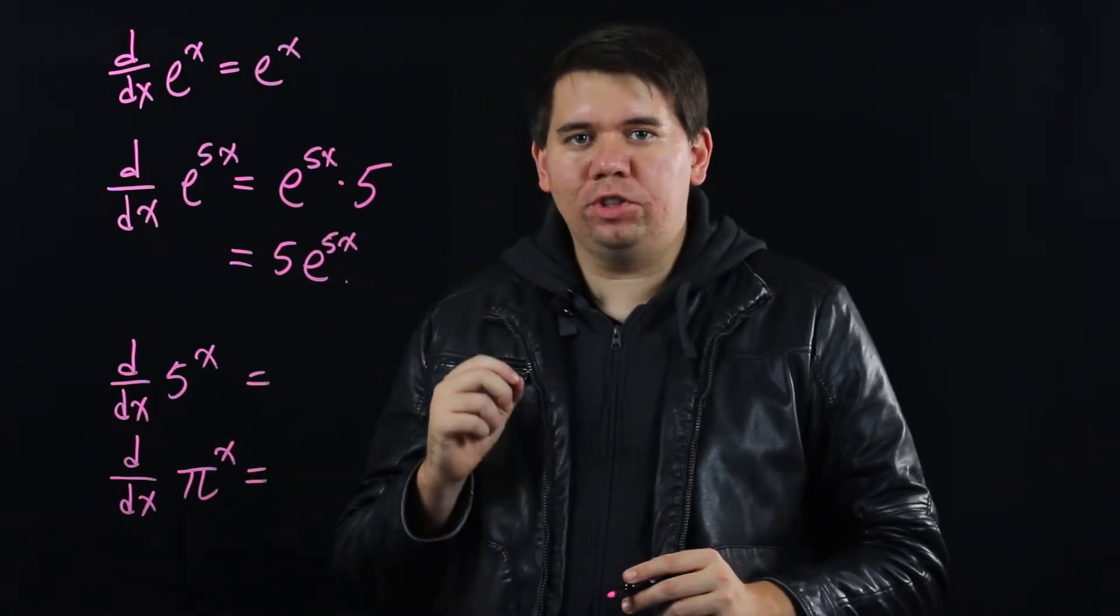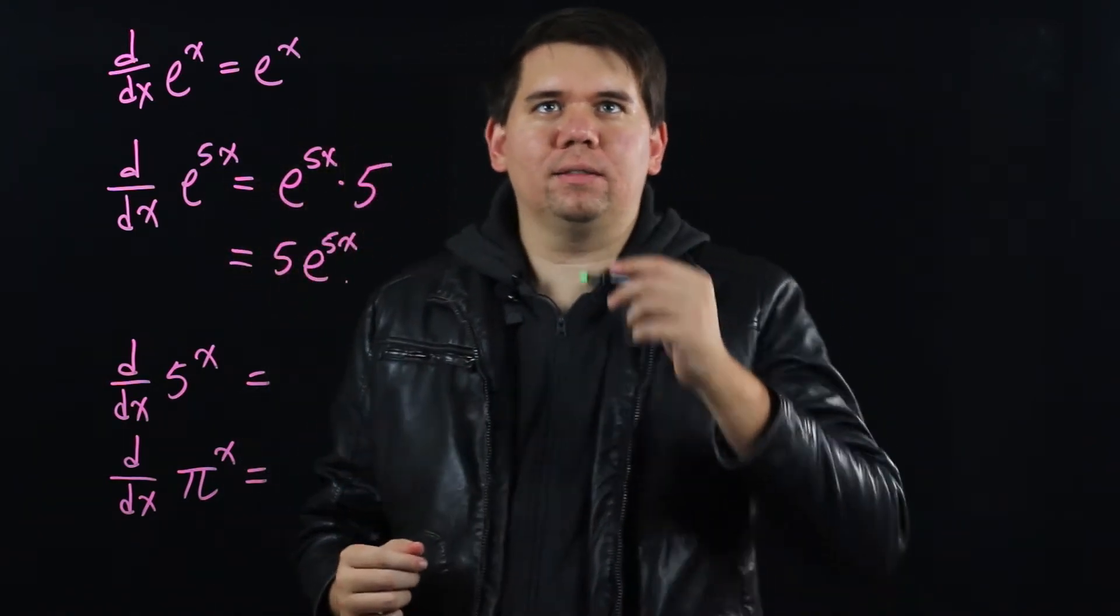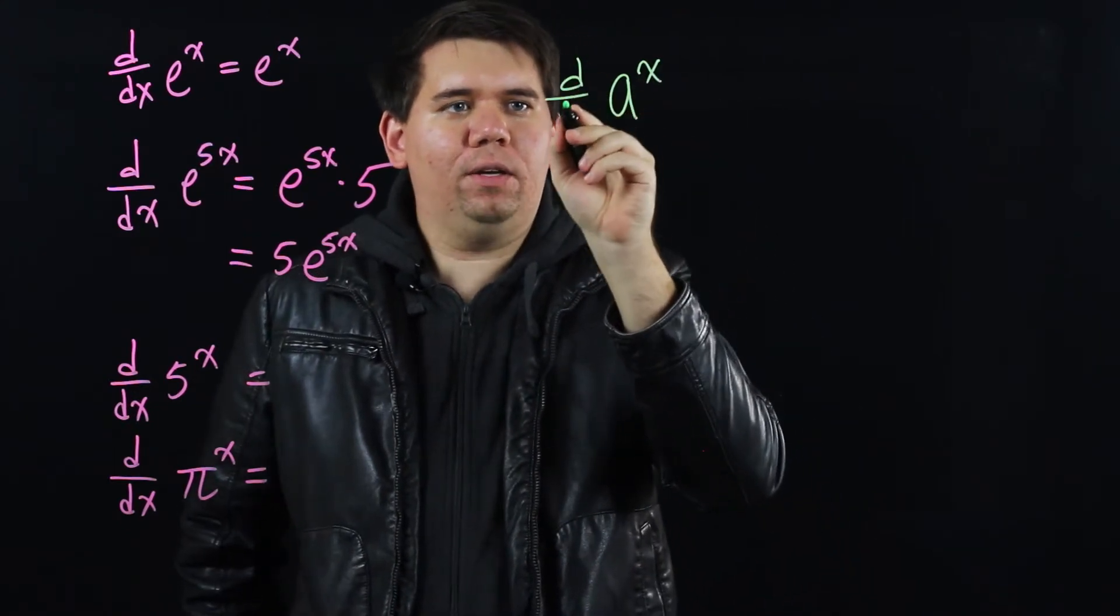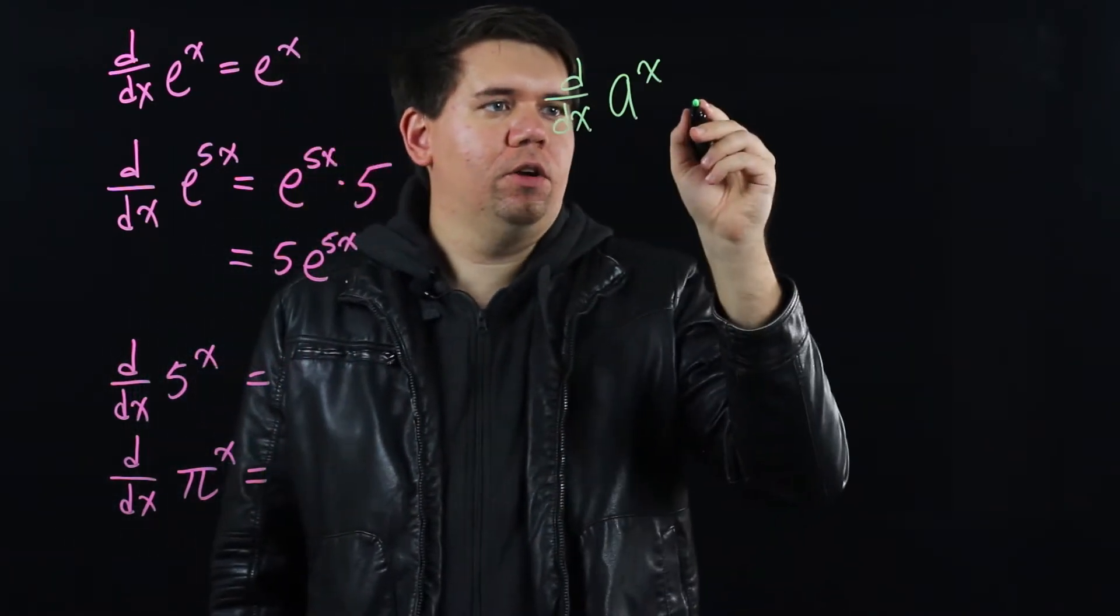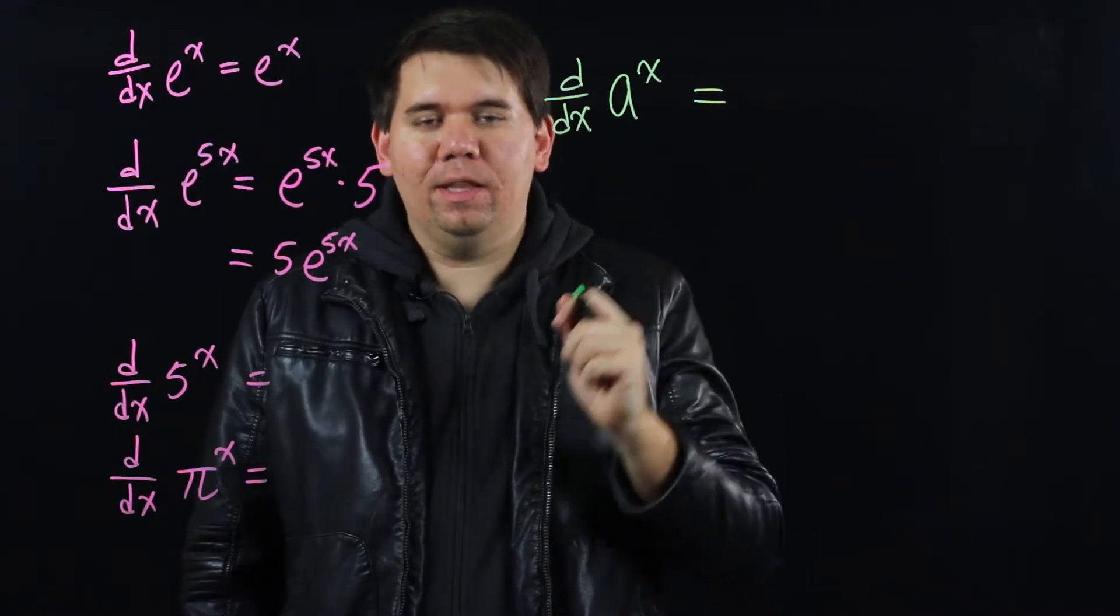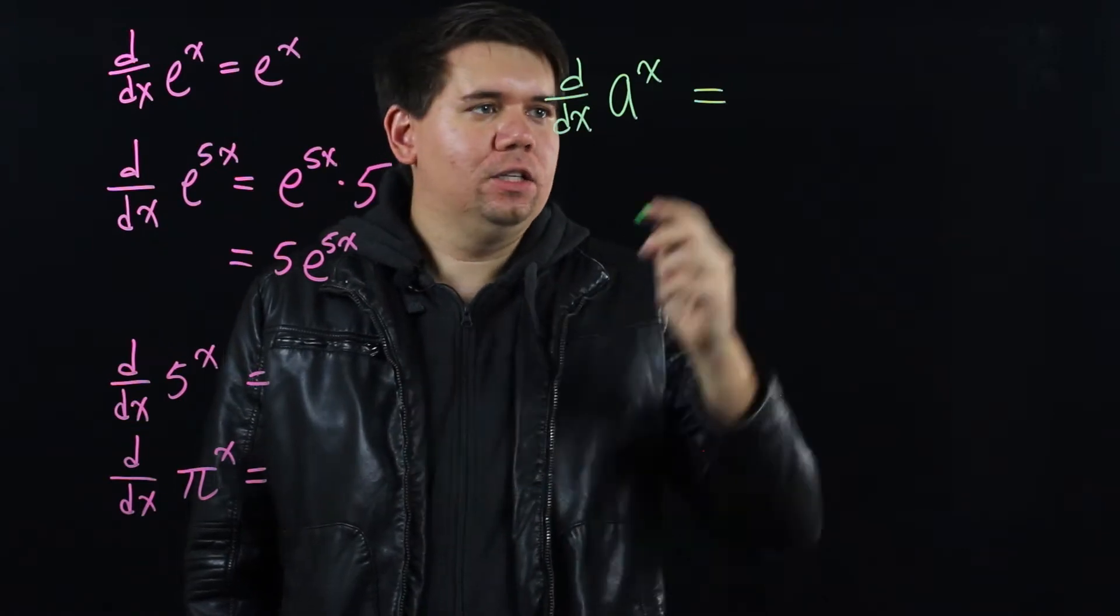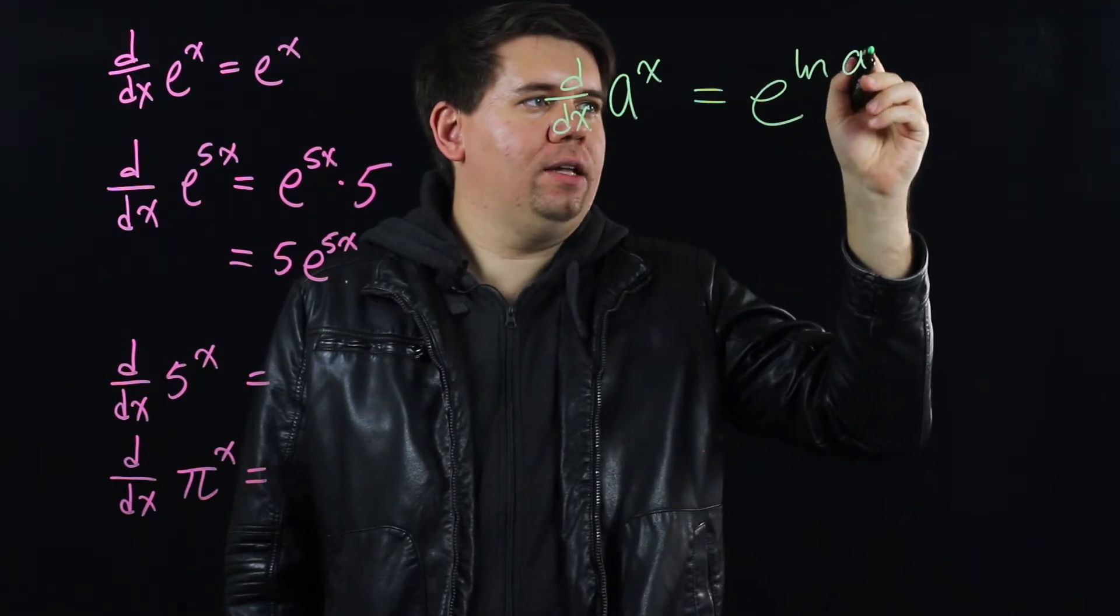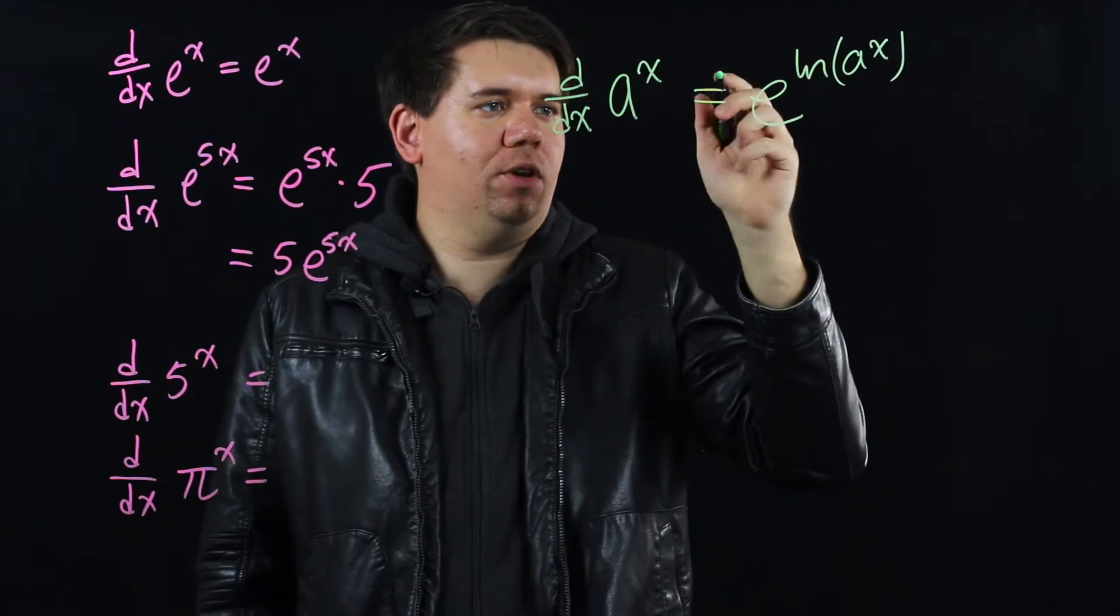It turns out that once more the chain rule comes in helpful. Let's think about the general case. Let's say we have some number a to the x power and we want to calculate its derivative. Well we're going to begin by doing a little trick. Remember that e to the is the opposite of the natural logarithm. You cancel e to the x by doing a natural logarithm. So e to the natural log of a to the x will just be a to the x because e cancels the natural log.